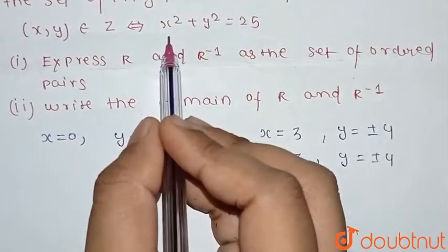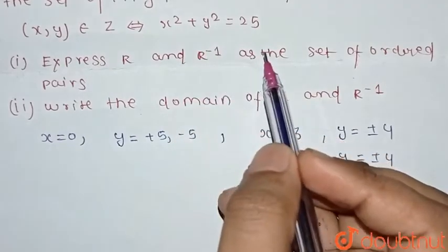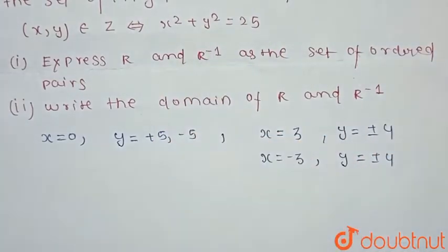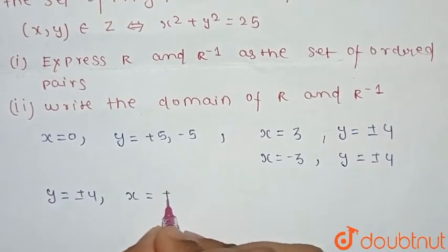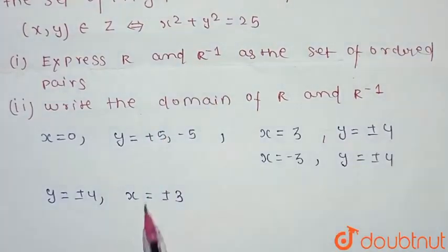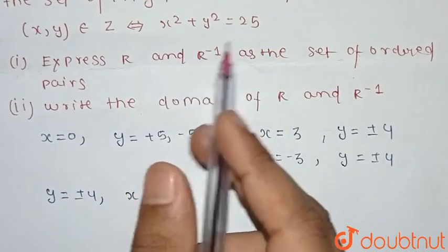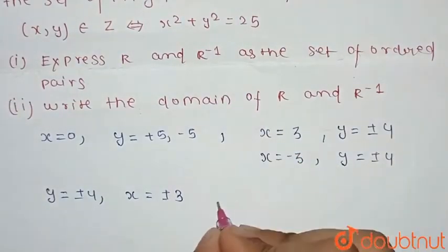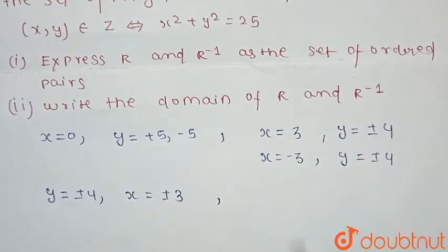For x = 4, y² = 25 − 16 = 9, which is a perfect square, so y = ±3. For x = 5, y² = 25 − 25 = 0, so y = 0. Also, for x = −5, y = 0. These are all the valid integer values of x and y.